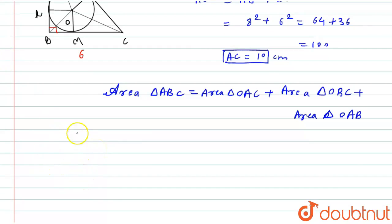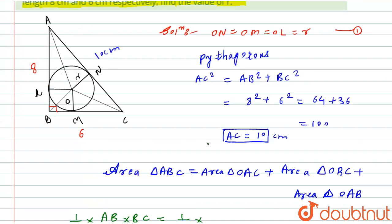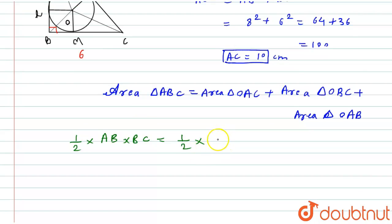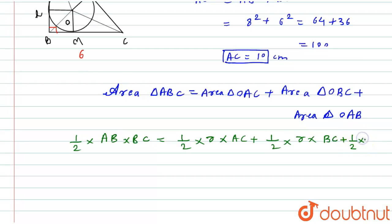Using the formula: area = ½ × height × base. For the bigger triangle, AB is the height and BC is the base, so it becomes ½ × AB × BC. For each smaller triangle, the height is r (the radius) and the base is the respective side: ½ × r × AC + ½ × r × BC + ½ × r × AB.